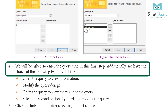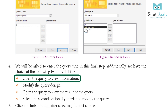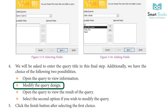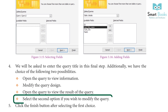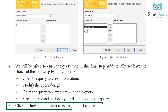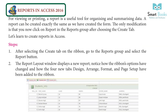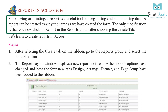Step four: you will be asked to enter the query title. You also have the choice of two options: open the query to view information, or modify the query design. Select the second option if you wish to modify the query. Step five: click the Finish button after selecting your choice. Reports in Access 2016: a report is a useful tool for organizing and summarizing data.